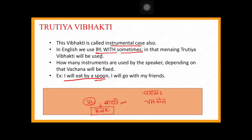If I eat with many spoons, the instrumental form becomes plural. The subject and verb remain unaffected by the instrumental case — subject and verb stay in agreement with each other. We simply add the instrumental word in between. Aham phalam khadami becomes aham annam chamasena khadami — I eat rice with a spoon — or aham annam hastena khadami — I eat with my hand.